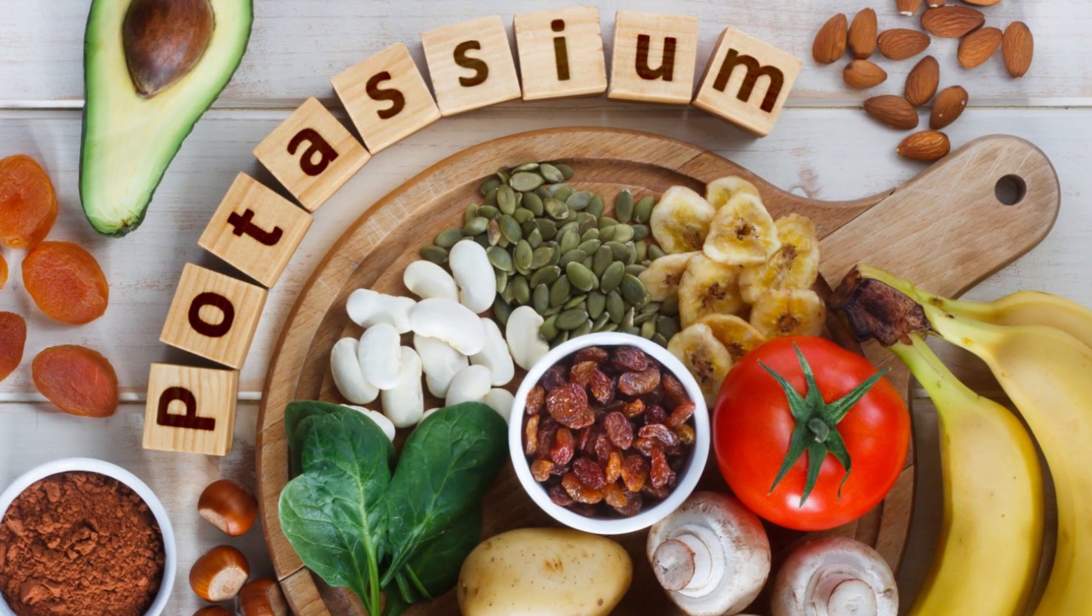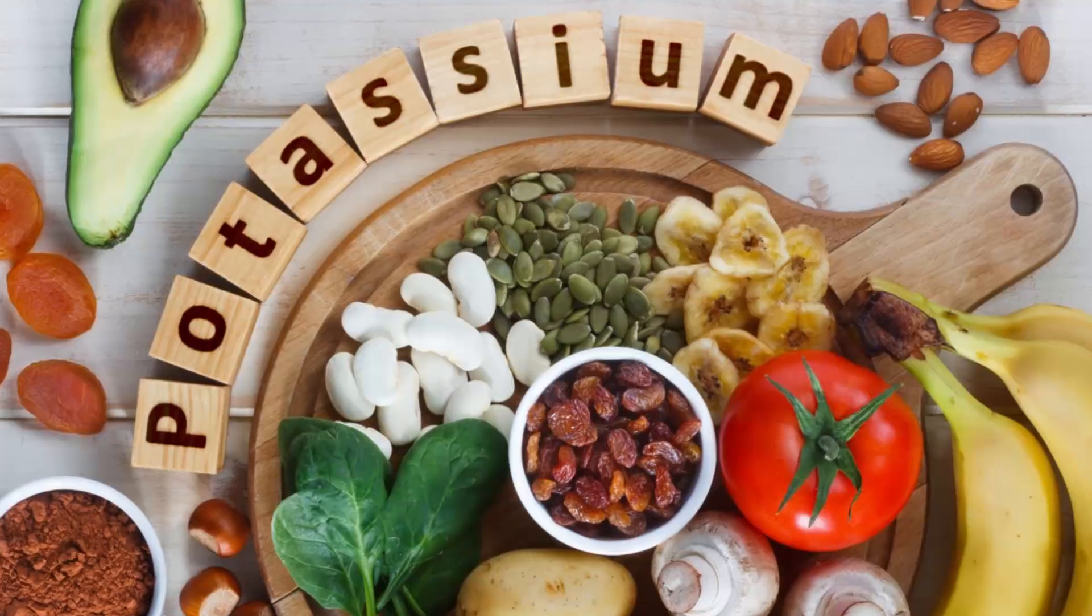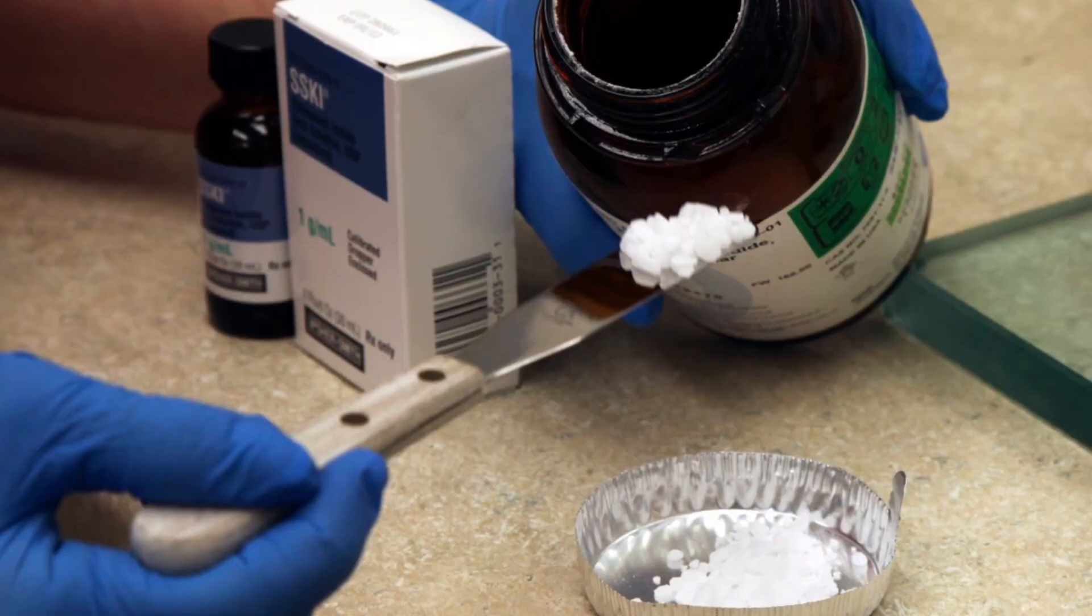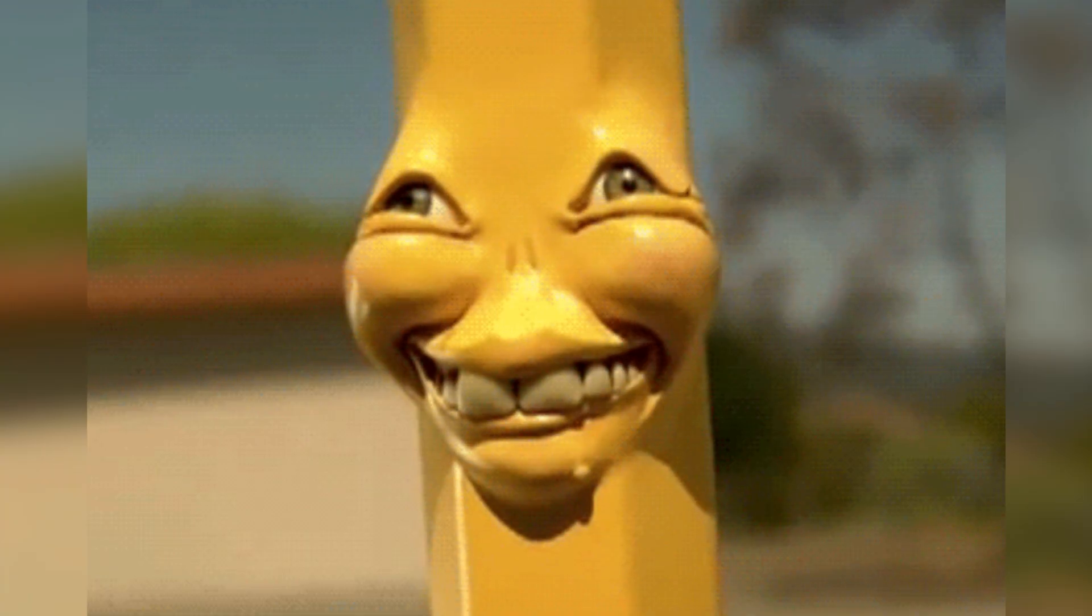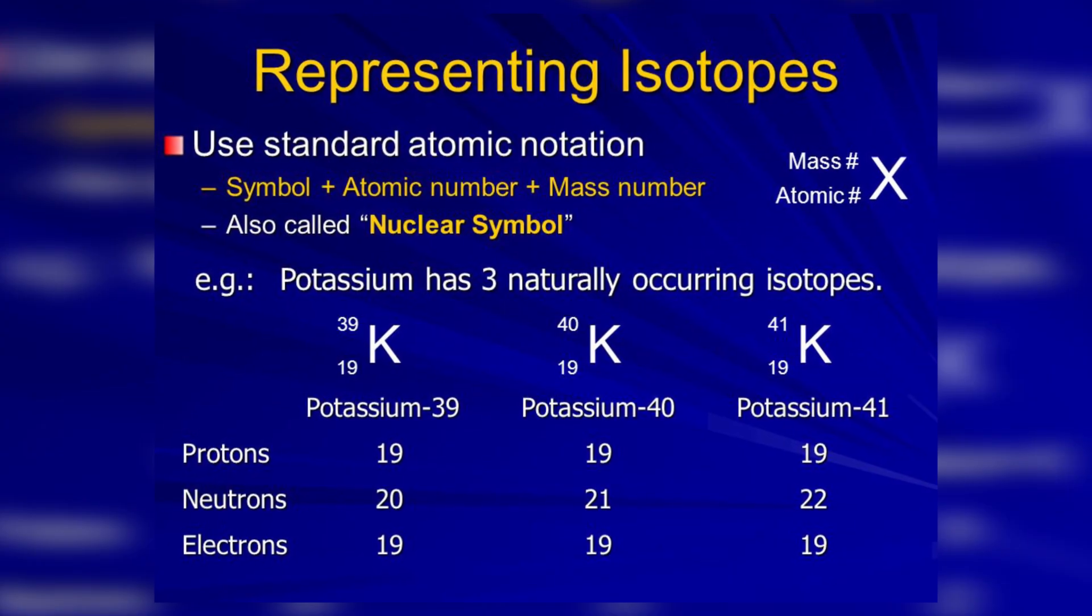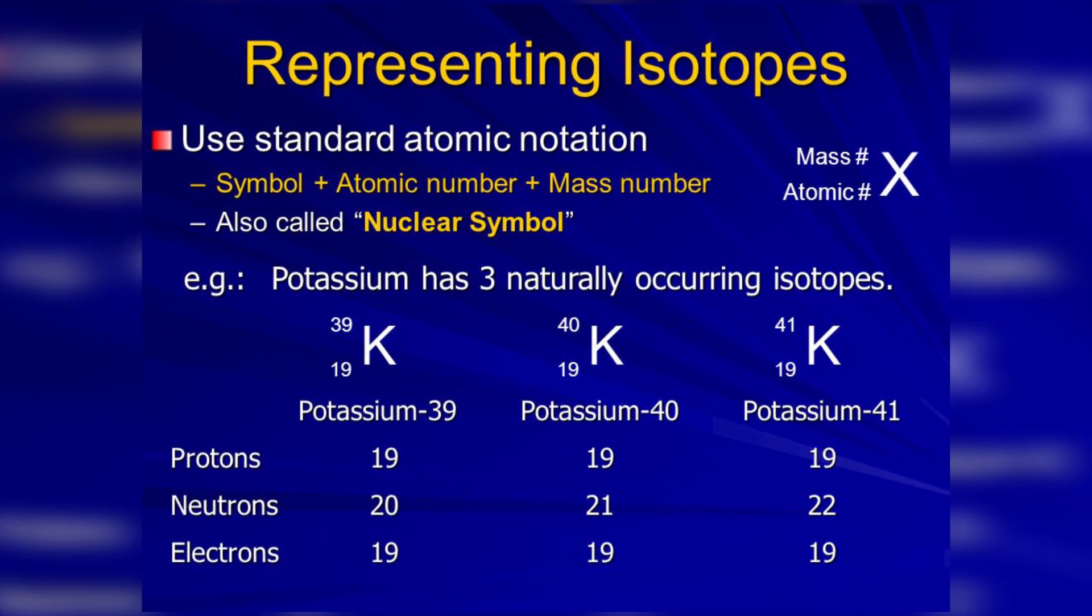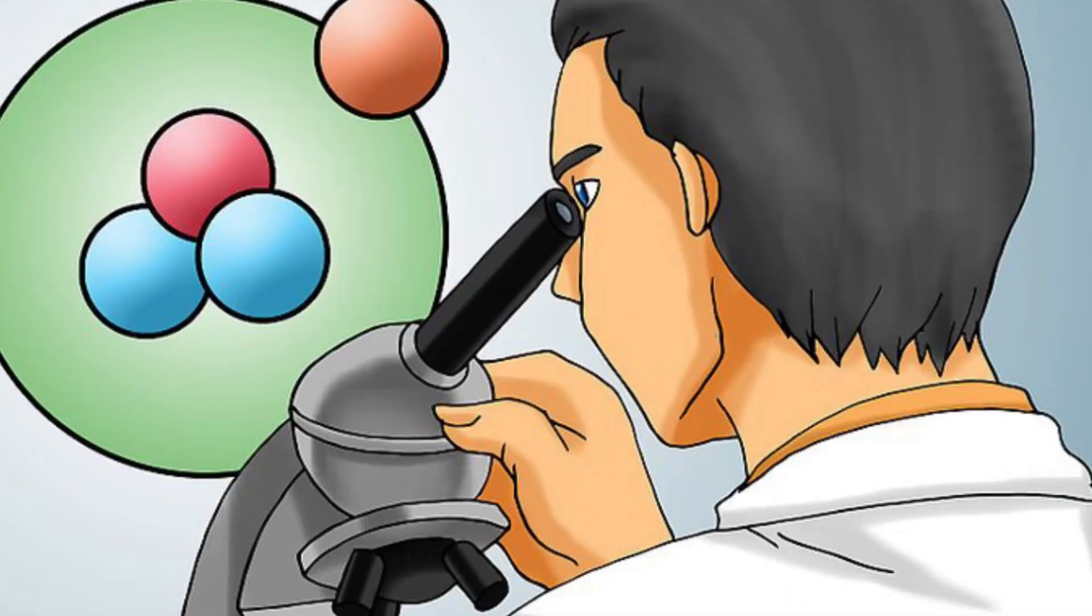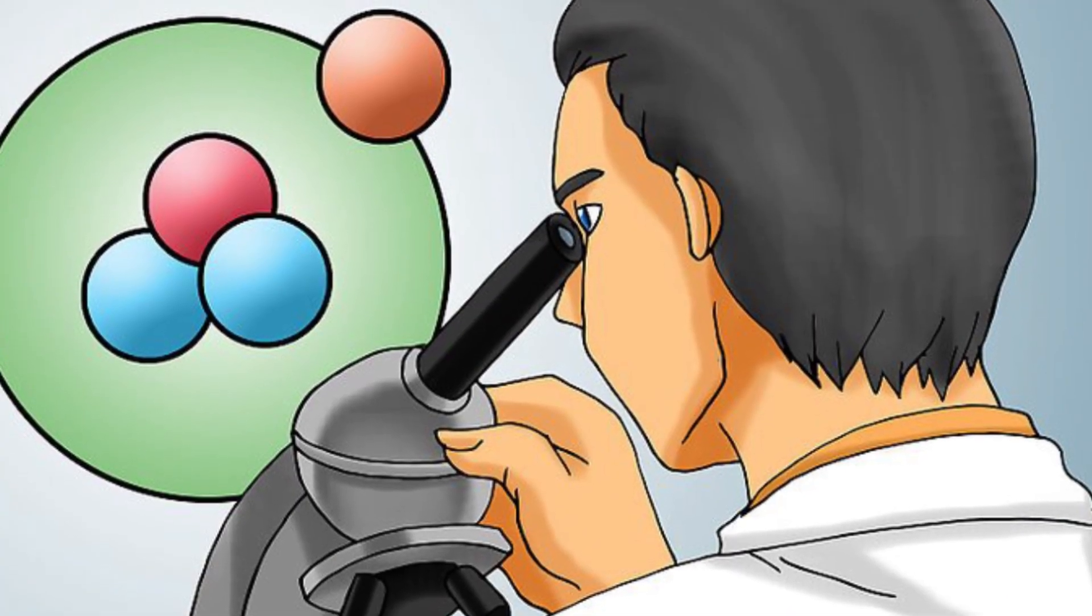A banana has roughly 450 milligrams of potassium, and 0.01% of potassium is radioactive. This means each banana contains roughly 45 micrograms of radioactive potassium, caused by the splitting of potassium isotopes. However, let's keep with the spirit of the question and explore ways in which we can intentionally split an atom.